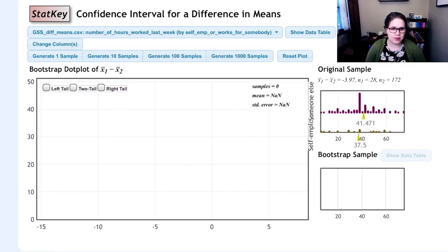It says n₁ is 28 and n₂ is 172. It's got the observed means and then it has the difference in means.